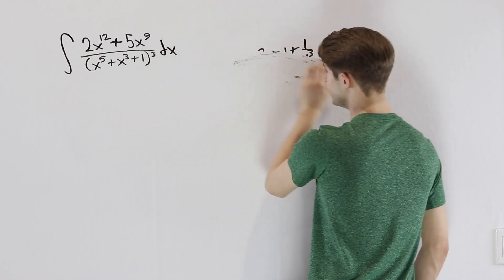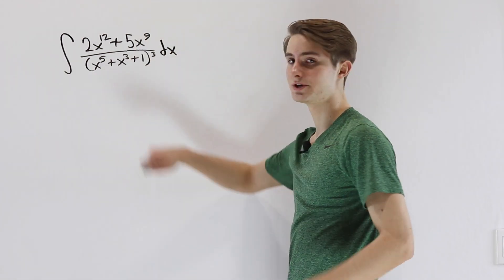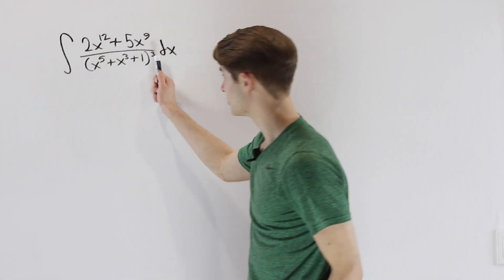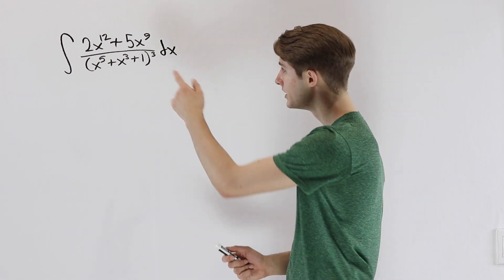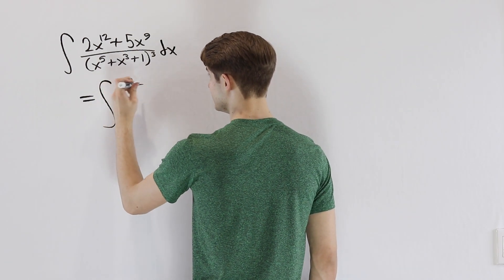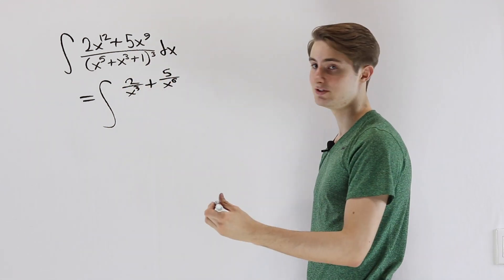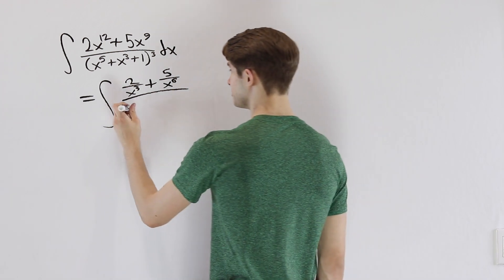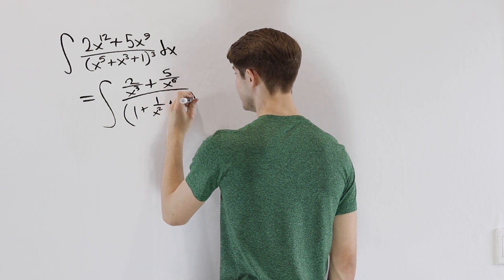Our only other option is to make the inside of the denominator divided by x⁵, so the x⁵ term becomes a constant and disappears under differentiation. Because it's inside a cube, we divide everything by x¹⁵. On the numerator: 2x¹²/x¹⁵ = 2/x³, and 5x⁹/x¹⁵ = 5/x⁶ (since 9 − 15 = −6). On the inside of the denominator, dividing by x⁵ gives 1 + 1/x² + 1/x⁵, then cubed.